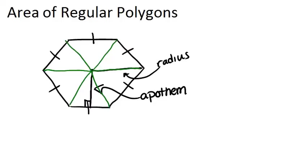So let's say our side length is s. Then, the area of one triangle will be s times a divided by two, and a stands for the apothem. So if that's the area of one triangle, then the area of the whole polygon will be that times the number of sides, n.